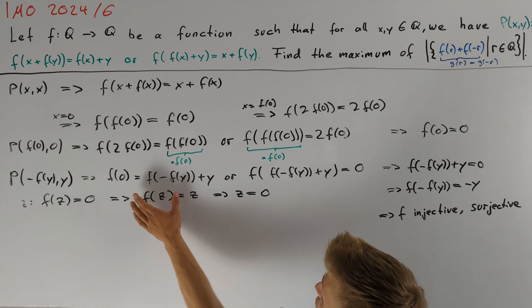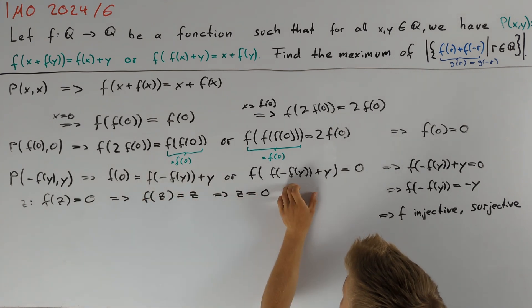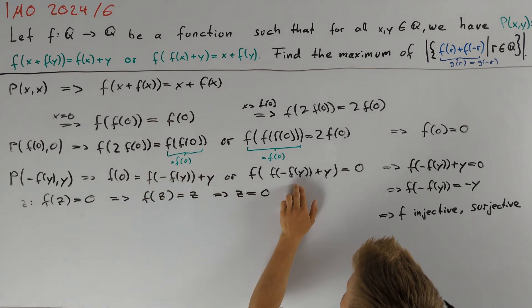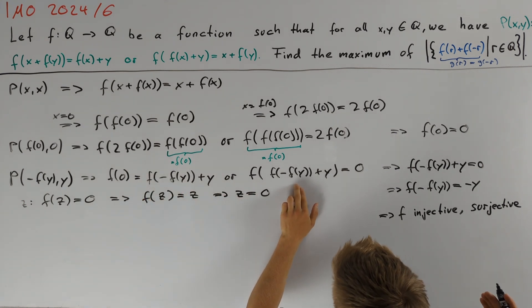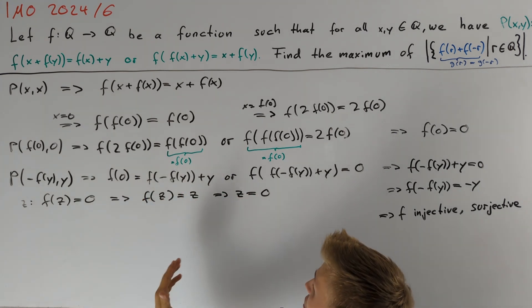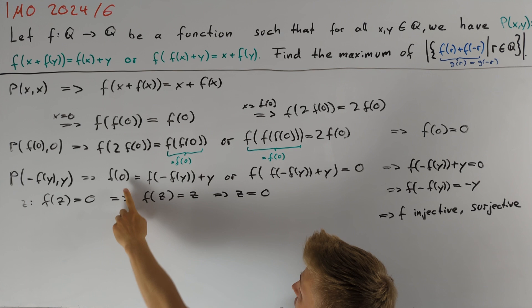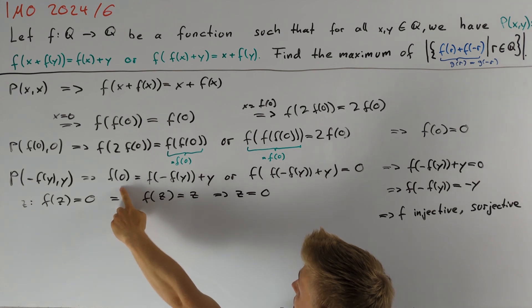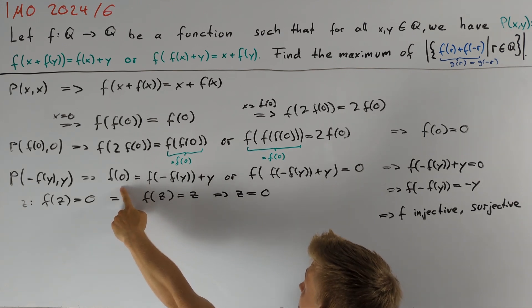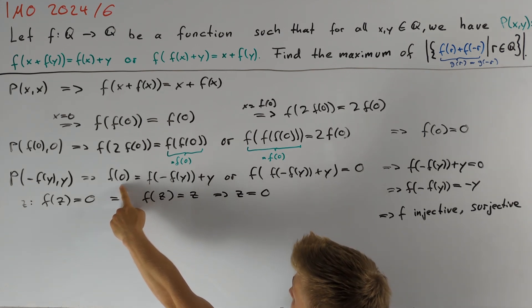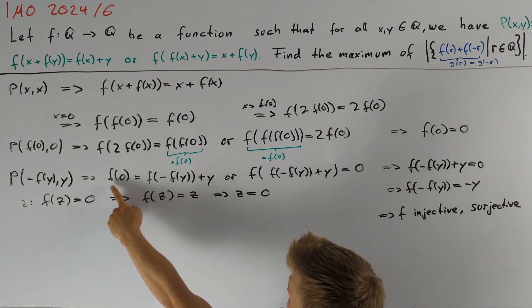This equation directly implies that f is both injective and surjective. Note that the important step for this implication was that both equations imply the same result. This was due to the fact that f(0) = 0, so 0 is a fixed point of our function f.